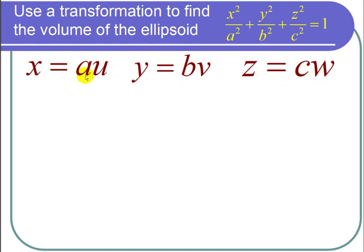The reason why this works, for example, if we plug in x equals au here, we get au squared over a squared, and that's a squared u squared over a squared, which is just u squared. Similarly, I get a v squared and I get a w squared, which is u squared plus v squared plus w squared equals 1, and that's the sphere that I'm looking for in the uvw space.